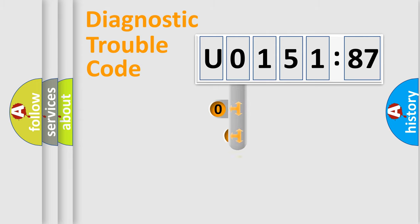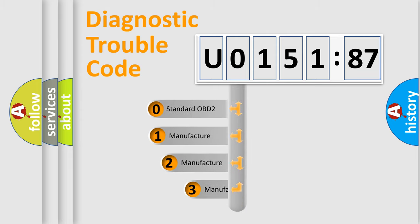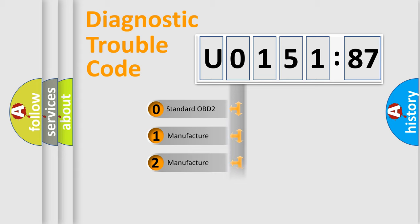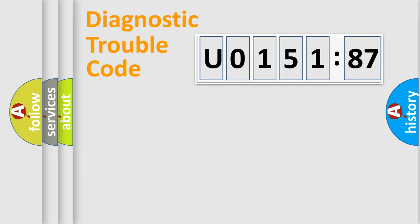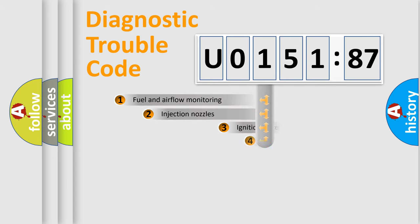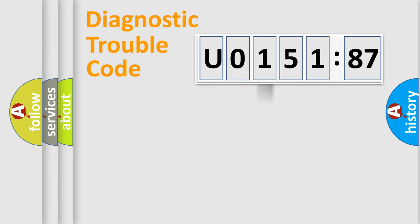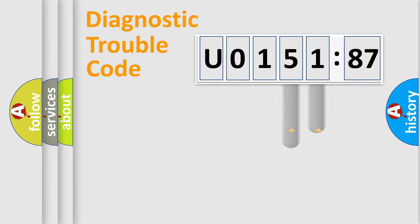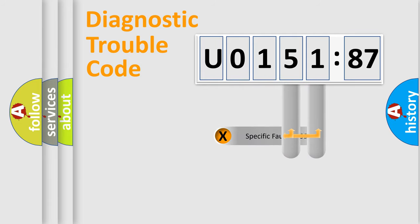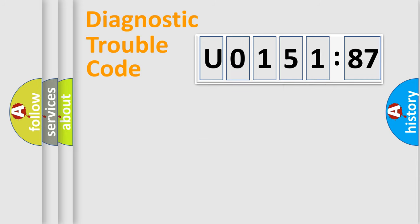This distribution is defined in the first character of the code. If the second character is expressed as 0, it is a standardized error. In the case of numbers 1, 2, or 3, it is a more specific expression of a car-specific error. The third character specifies a subset of errors. This distribution is valid only for the standardized DTC code. Only the last two characters define the specific fault of the group.